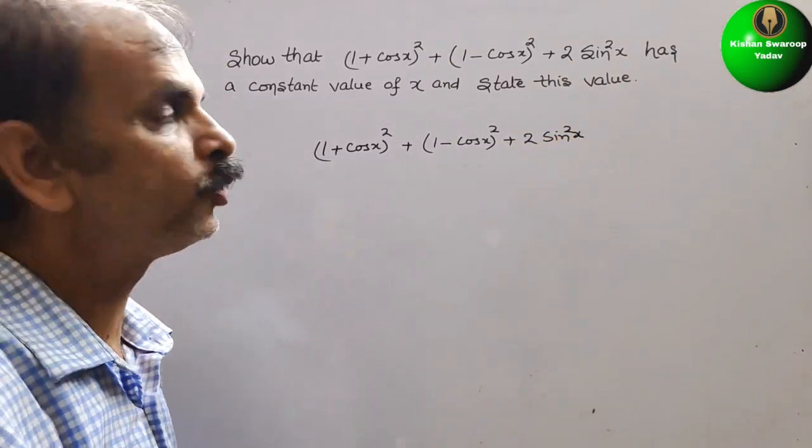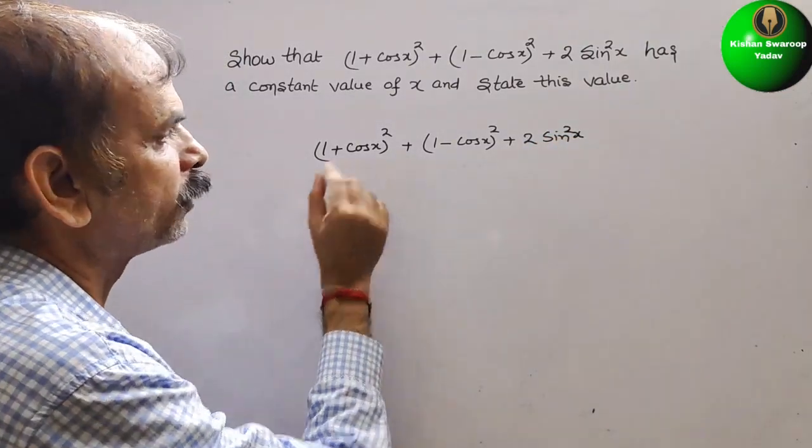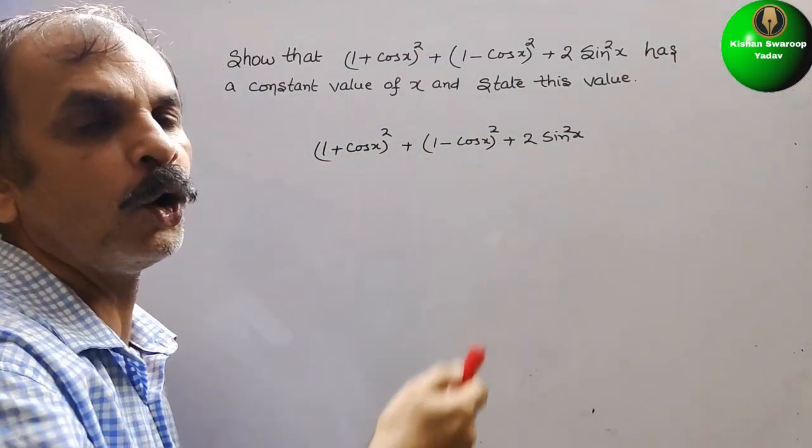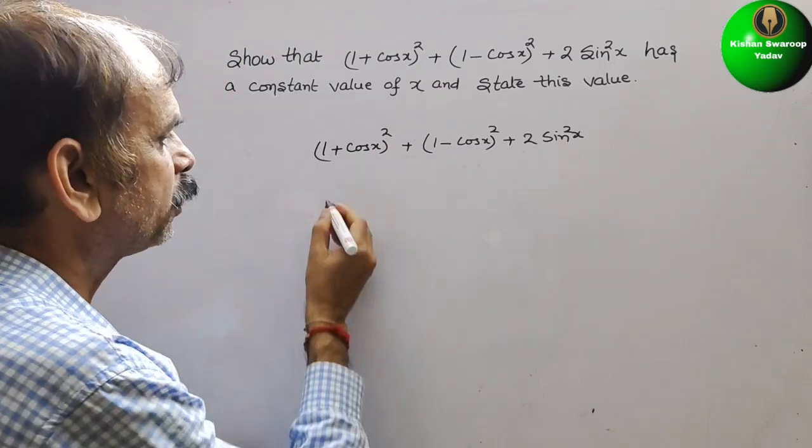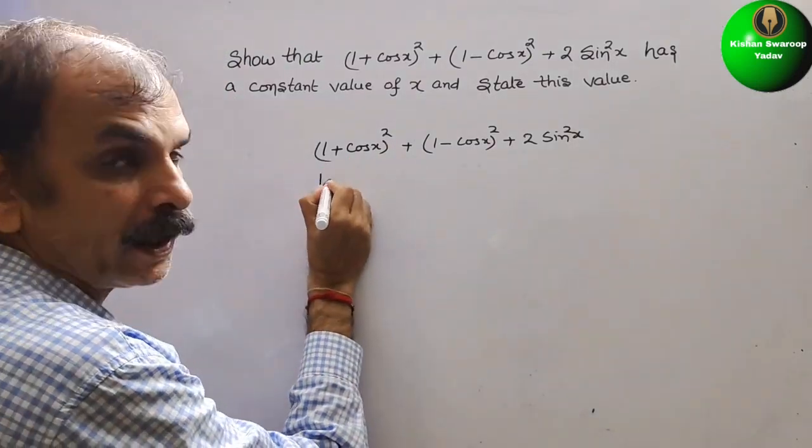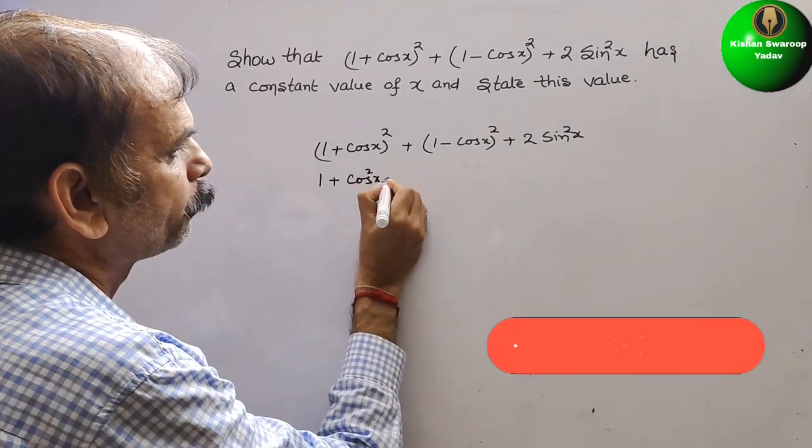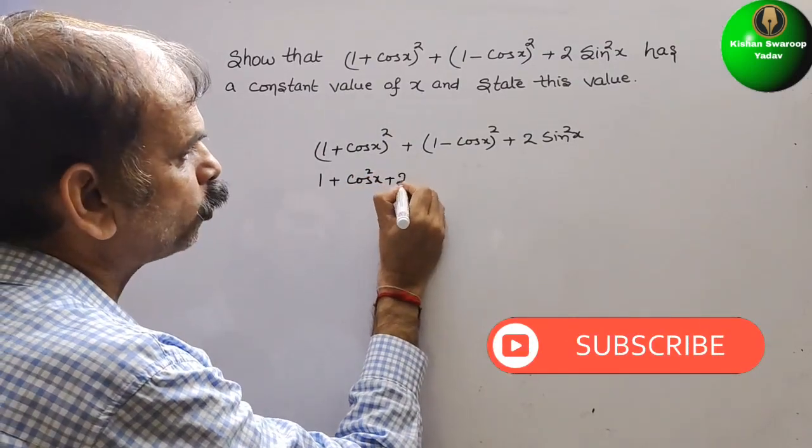So now what we have to do, we have to first solve. So this is in the form of (a+b)², so it will be: a² is 1, b² is cos²x plus 2ab is 2cos x.